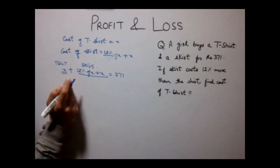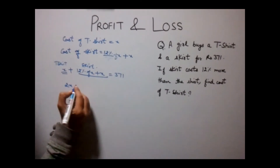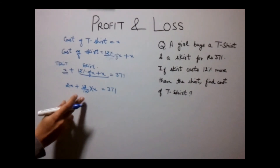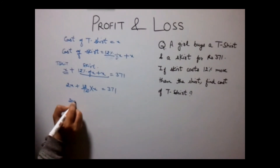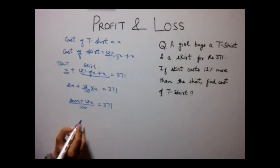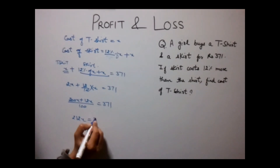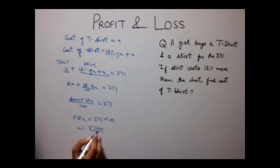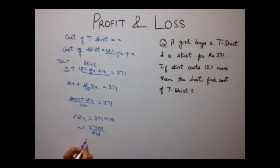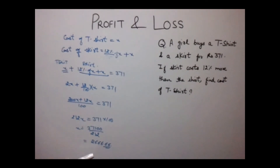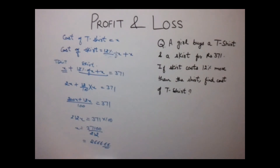Solving: x + x + 12/100 × x = 371, which gives 2x + 12x/100 = 371. Taking LCM: (200x + 12x)/100 = 371, so 212x = 37100, giving x = 37100/212 ≈ 175. So the cost of the t-shirt is approximately Rs.175.